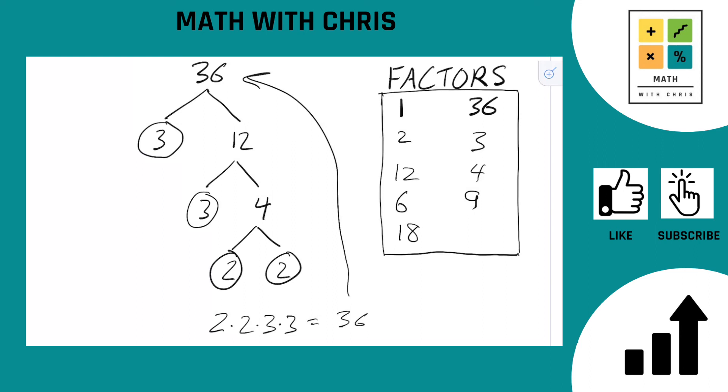So that's the factors of 36. Hope you guys found that helpful. If you'd like to see another example of finding factors using factor trees, check the video in the upper left corner. Until next time, guys, have a great day.